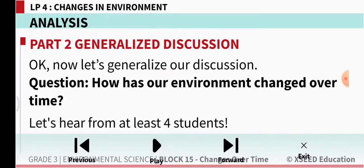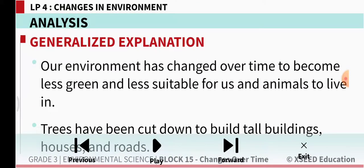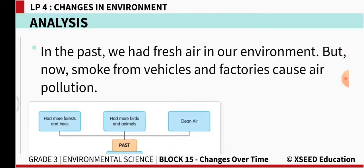Our environment has changed over time to become less green and less suitable for us and animals to live in. Trees are our green friends — they purify the air, and with fewer trees the environment is no longer suitable. Trees have been cut down to build tall buildings, houses and roads. In the past we had fresh air, but now smoke from vehicles and factories causes air pollution.